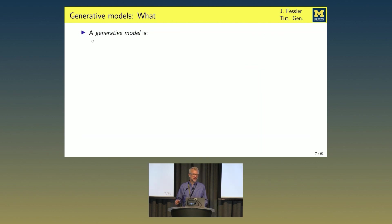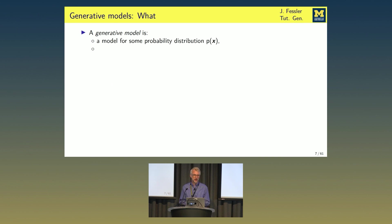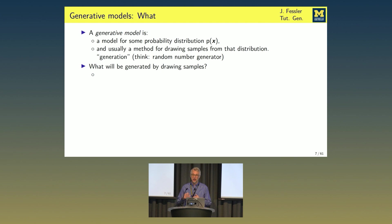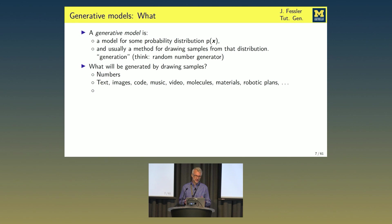So I'm going to attempt to give definitions of most of the words in the title of the symposium. A generative model is typically a model for some probability distribution and a method for drawing samples from that distribution. The generation here, for those familiar with this, is like random number generators. What will be generated when drawing samples? At the lowest level, numbers. But in the digital era, we use numbers to represent lots of things: text, images, videos, molecules, even robotic plans. These are all applications people have used generative models for.